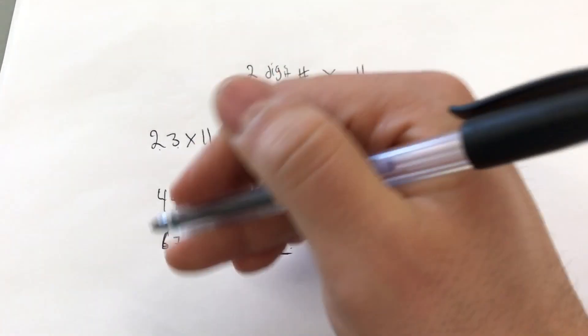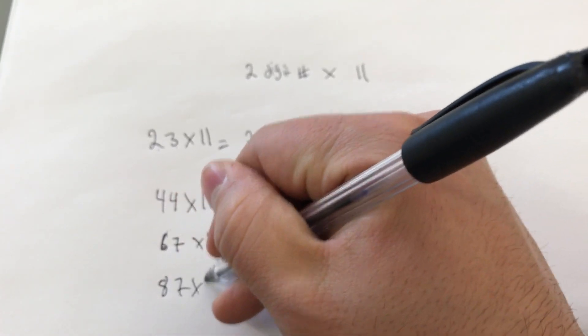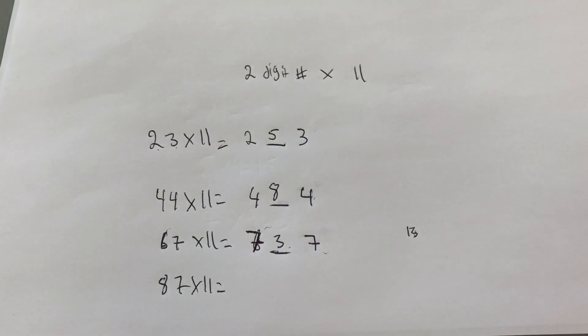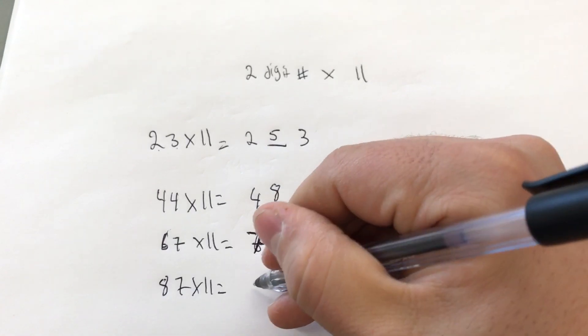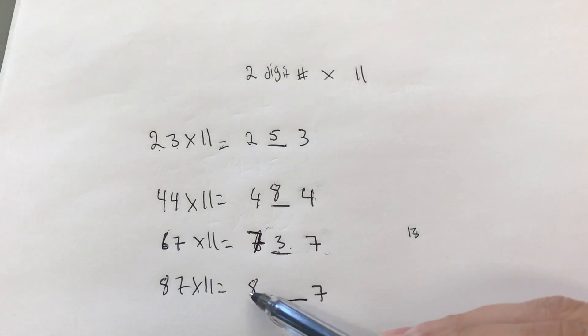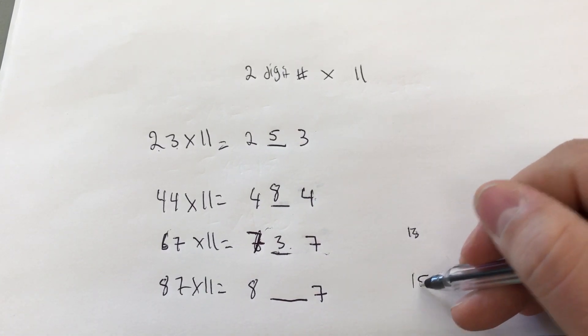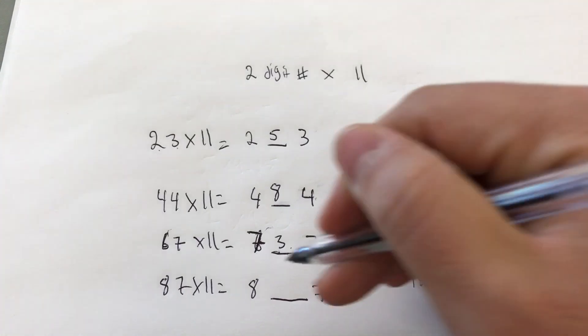Let's do one more, a nice large one. Let's do like 87 times 11. So we're going to take the 8 and the 7 and put a space between them just like that. And then we're going to add the 8 and the 7 together, which gives us 15. Once again, write down the 15 over here. And we take the 5, which is the second digit. We put it in that space.